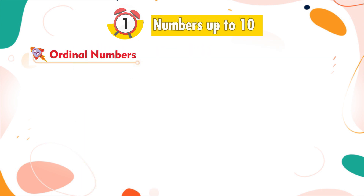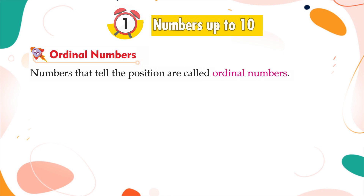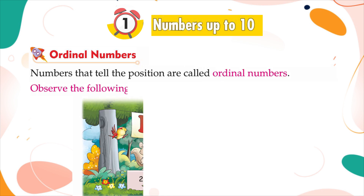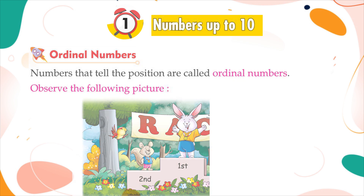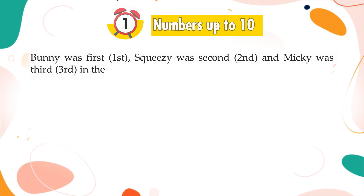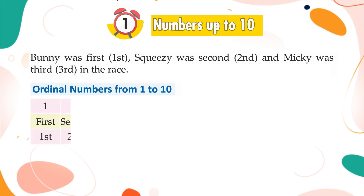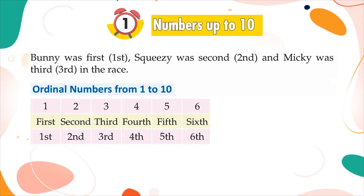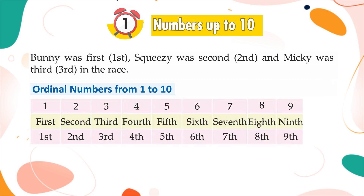Ordinal numbers. Numbers that tell the position are called ordinal numbers. Observe the following picture: Bunny was first, Squeezy was second, and Mickey was third in the race. Ordinal numbers from one to ten: first, second, third, fourth, fifth, sixth, seventh, eighth, ninth, tenth.